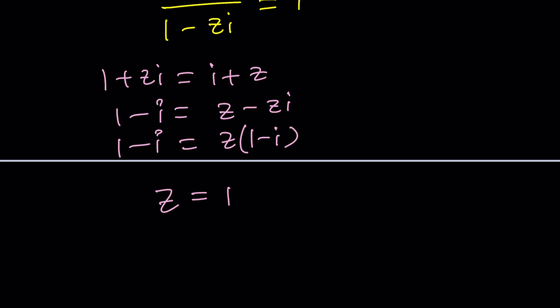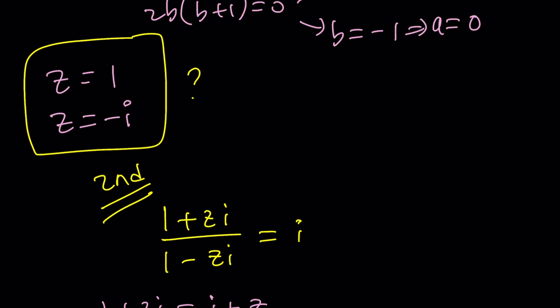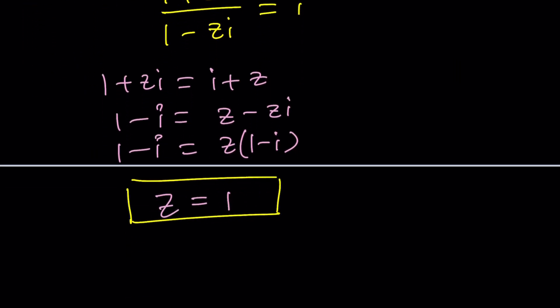This is the million dollar question. Why did we get only one solution with the second method but two solutions with the first method? Because the second solution might not satisfy. We need to check. Let's check if z equals negative i works. Replacing z with negative i gives 1 minus i squared over 1 plus i squared. 1 minus i squared is 1 minus negative 1 which is 2. 1 plus i squared gives 0. So this is undefined. Therefore, even though it came up as a solution, negative i cannot be accepted and we end up with a single solution: z equals 1.